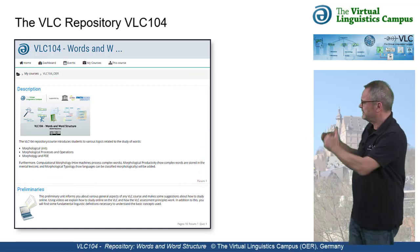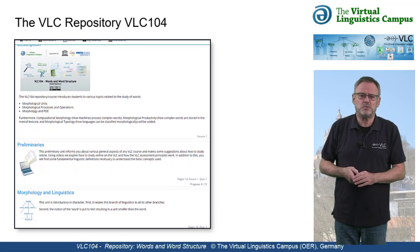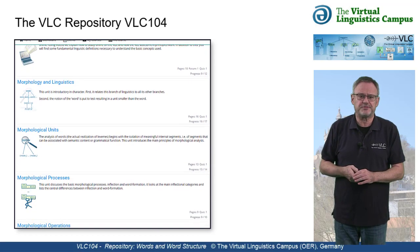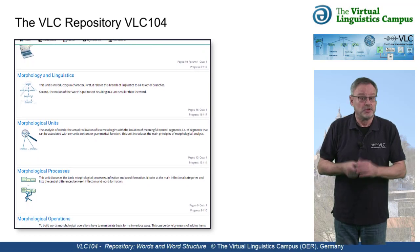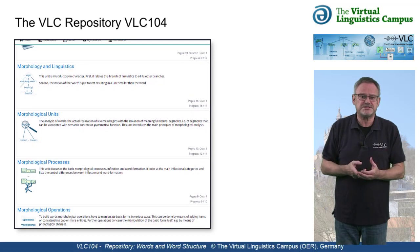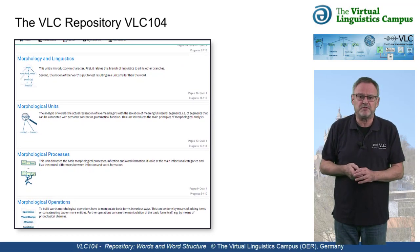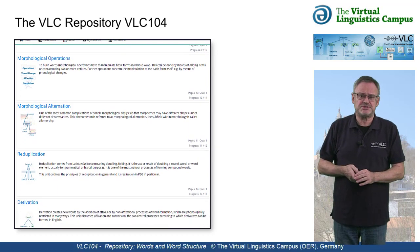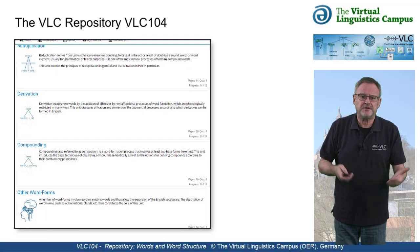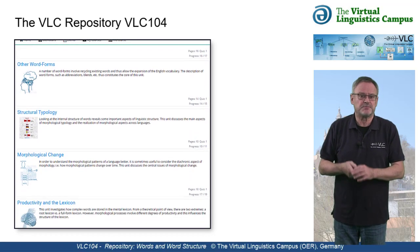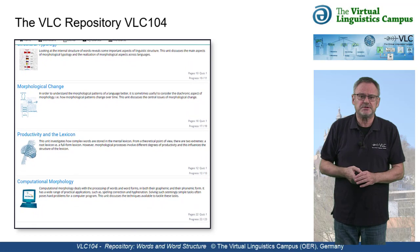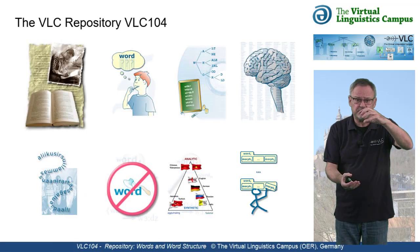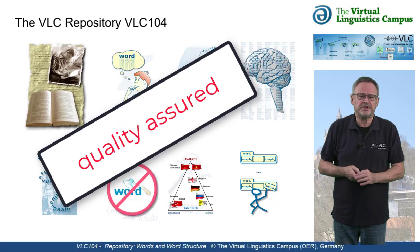Here are the current content units of VLC 104. As you can see, the VLC 104 repository consists of three parts. The first part discusses the analysis of words and the central underlying concepts used in morphology. In part two, we will deal with the main processes used to form words. The third part focuses on extended aspects such as productivity issues, computational, historical, and structural morphology. This list of units is growing, updated, and quality assured on a regular basis.